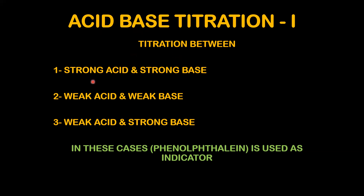If the titration involves a strong acid and strong base, or a weak acid and strong base, you have three possible cases: both acid and base are strong, both are weak, or the acid is weak and the base is strong. All of these fall under the acid-base titration 1 category.